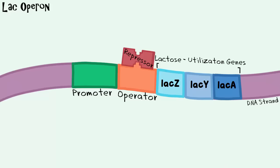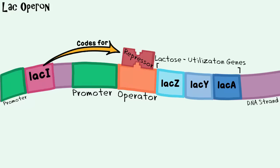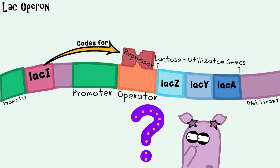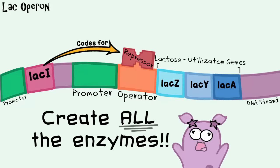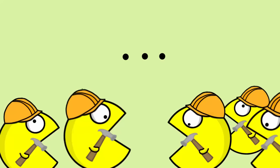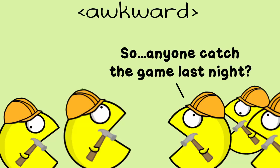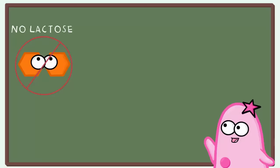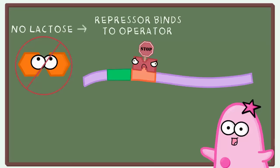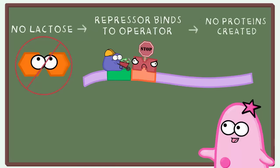There's actually a gene here that codes for producing the repressor — we call it gene I — and it has its own promoter. This gene codes for the production of the repressor. Why do we need this repressor? It's wasteful to make things that you don't need. If there's no lactose, it wouldn't make sense to start making enzymes that work together to break down lactose. So if lactose is not present, the repressor binds to the operator and blocks RNA polymerase, so mRNA cannot be made and therefore the enzymes cannot be made.